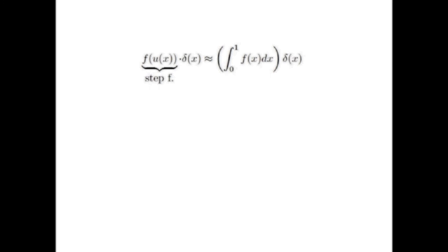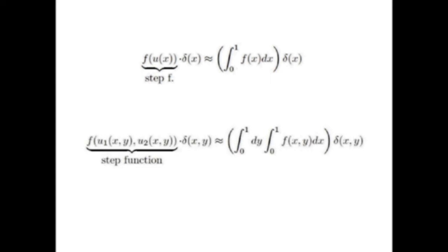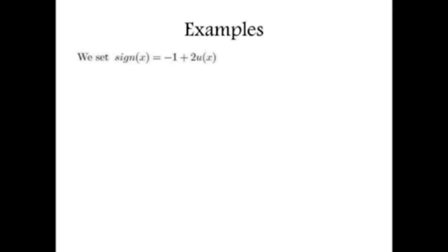To recap: f(u) times delta can be associated to a delta function whose amplitude can be easily evaluated. A similar reasoning also gives an equation for the multi-dimensional case. Regarding f, we said f should be smooth, but it is actually possible to show that it is enough for f to be locally integrable.